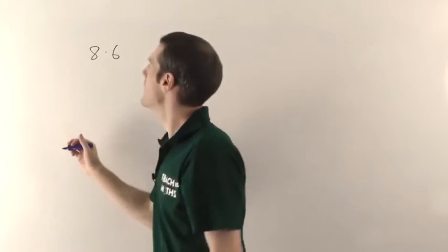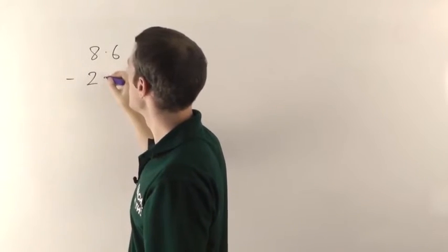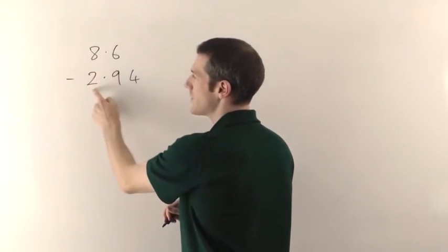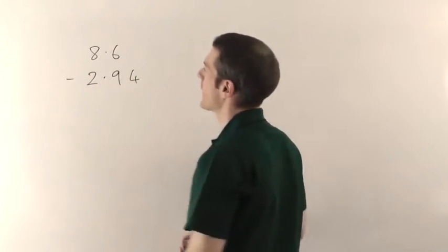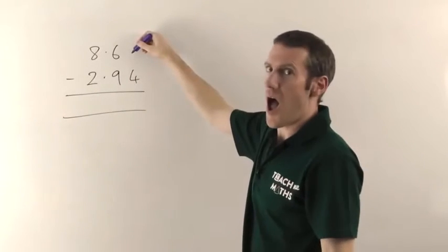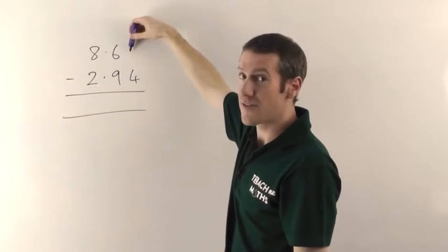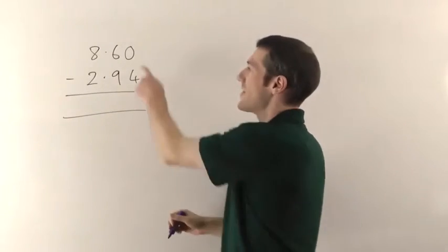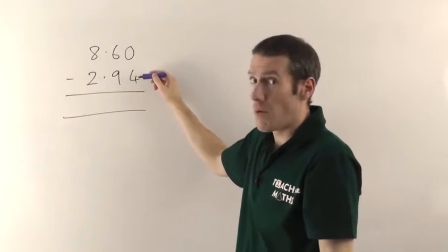Let's do 8.6 minus 2.94. You see I've lined up my units column, decimal points—that's the tenths column, and then this will be the hundredths column. Now I've intentionally picked one here where you've got a gap minus the 4, but again, remember on the end here if you've got nothing there it's just a 0. So fill it out with a 0 to line everything up, and then you'll be able to do the subtraction.